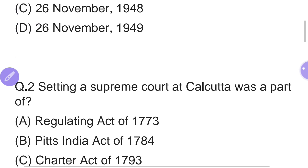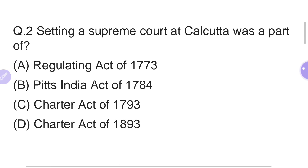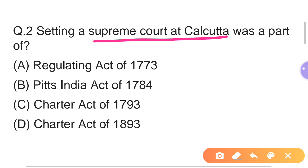Second question: The Supreme Court at Calcutta was set up under which act? These acts have been discussed in Indian Polity in the first lecture. Option A: Regulating Act of 1773. Option B: Pitt's India Act of 1784. Option C: Charter Act of 1793. The right answer is Option A — the Regulating Act of 1773, which first mentioned that the Supreme Court would be set up in Calcutta.